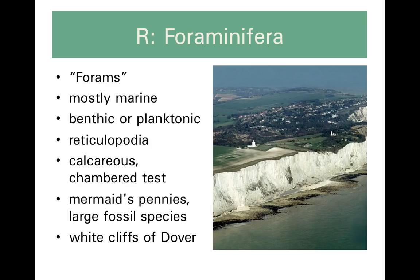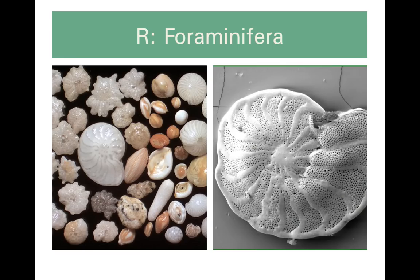A lot of our chalk deposits — large deposits of calcium carbonate — are made out of the fossilized tests of foraminifera. You can see how some of them look like a chambered nautilus, with little lines representing new chambers as the organism grows, and they're pocked with little holes. Those are the holes they are famous for, out of which those reticulopodia may emerge.